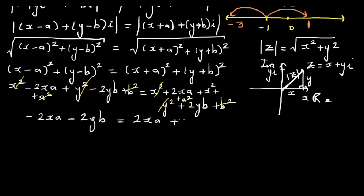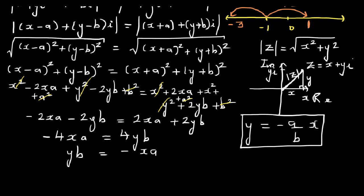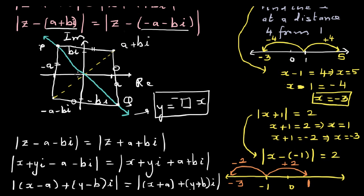Bringing the x and y terms together: -4xa = 4yb, so yb = -xa. Therefore y = -(a/b)x is the equation of the locus. This is a straight line passing through the origin with negative gradient, exactly as expected. Any point on this line is equidistant from a + bi and -a - bi.